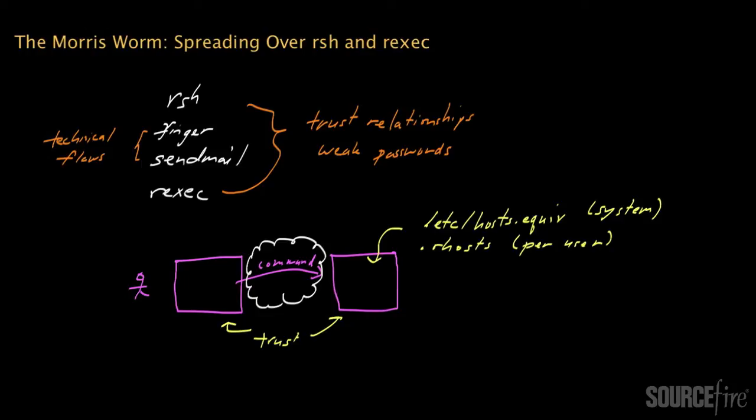The Morris worm actually accomplishes this step by simply guessing the password, and it uses an intelligent password guessing scheme. I made a separate video describing how the Morris worm guesses passwords, so I won't repeat that content here. The main point is that if a hostname is listed in one of these files,